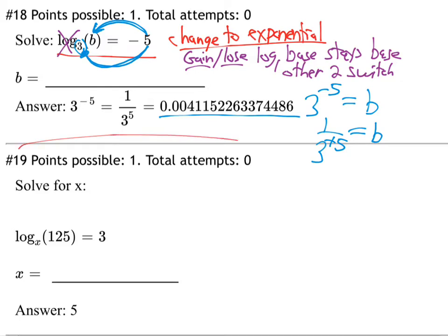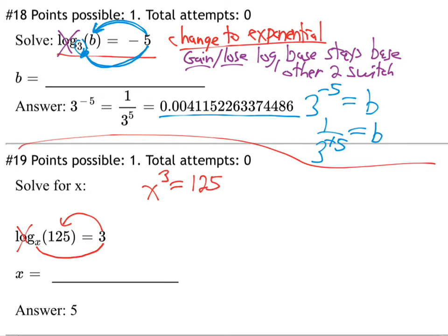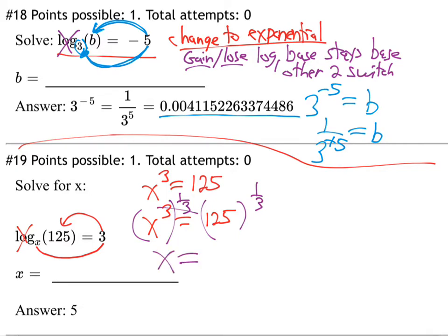Let's try another one. Cross out the log. When you lose the log word, the base stays the base and the other two switch. So it becomes x to the third equals 125. To solve for x, raise both sides to the one-third power. Take 125 to the power of 1 divided by 3 on your calculator and you'll get 5, because 5 times 5 times 5 equals 125.